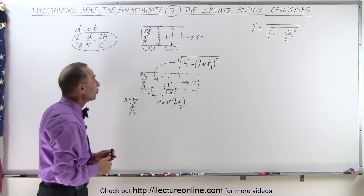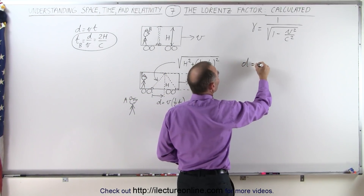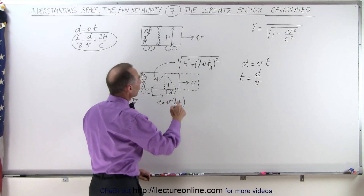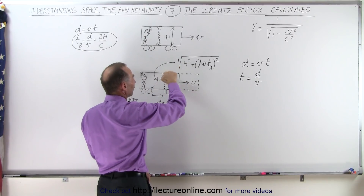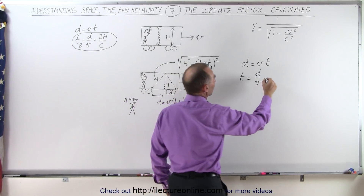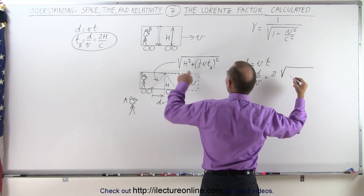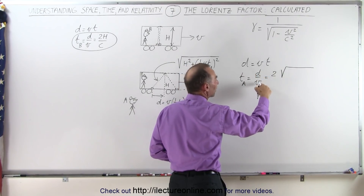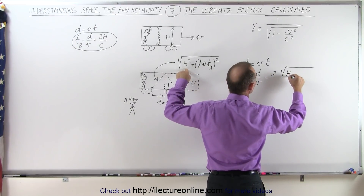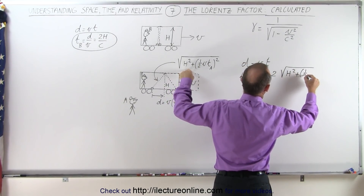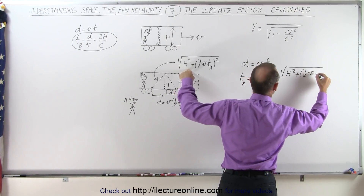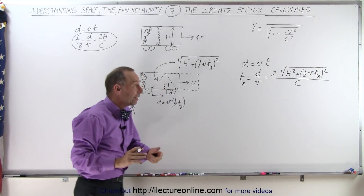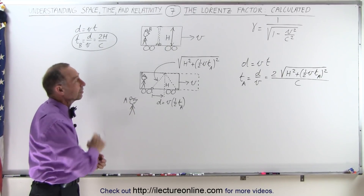Using distance equals velocity times time again, the total distance as seen by A is twice the slanted side — one up and one down. So the time as measured by A equals the distance divided by the speed. That gives us: T_A equals two times the square root of h squared plus one-half V times T_A quantity squared, all divided by C — because Einstein said everybody sees light moving at the speed of light.